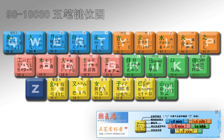A poem was made as a mnemonic for the Wubi keyboard, associating a few characters with each key. The first character is the corresponding key's main component, while the next ones are components or associated characters.